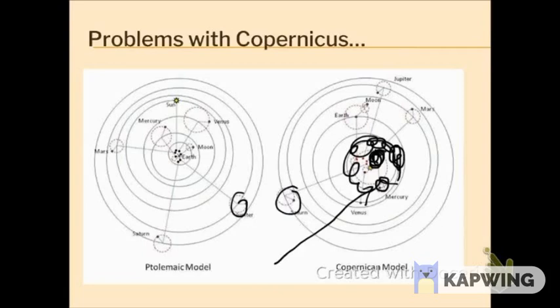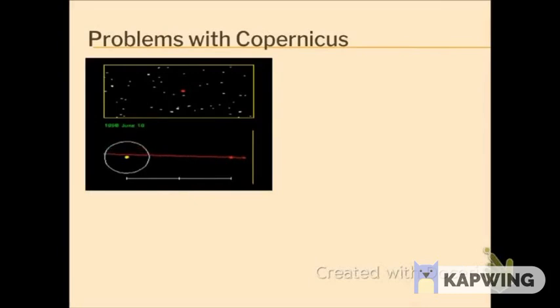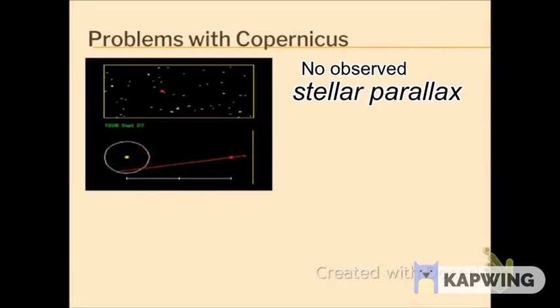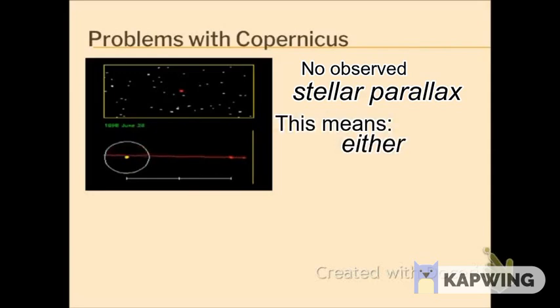So, the other problem with Copernicus is that problem of stellar parallax. The argument of stellar parallax was this. If the Earth was actually going around the Sun, as you see right here, then when someone looked at a nearby star and looked at it against the background of other stars, then if Earth is moving, we should see it shift back and forth like you see here in this animation. We would see, Earth would, from its different point of view, would see that star shift across a background. Now, we don't see that. We don't see the stars shift across the background.